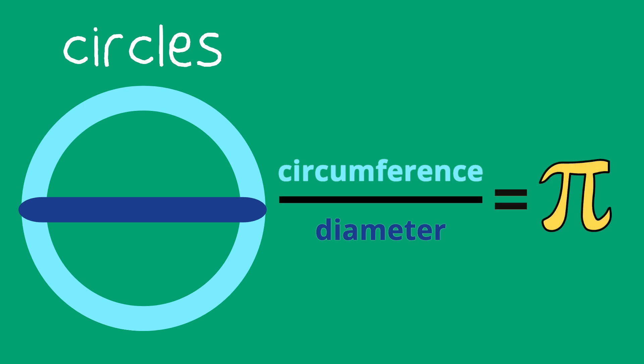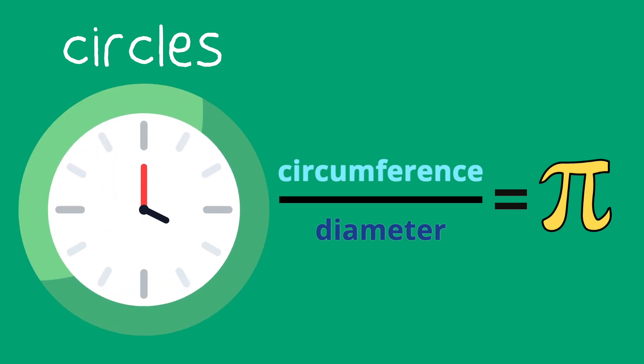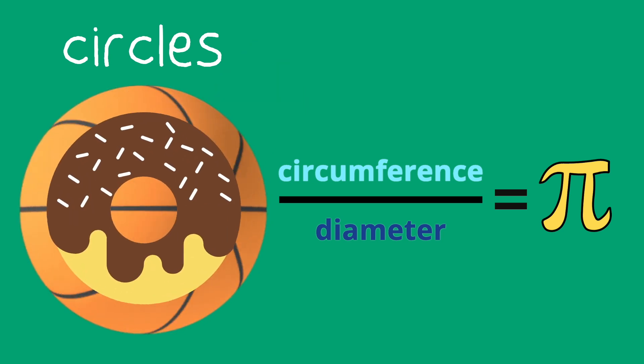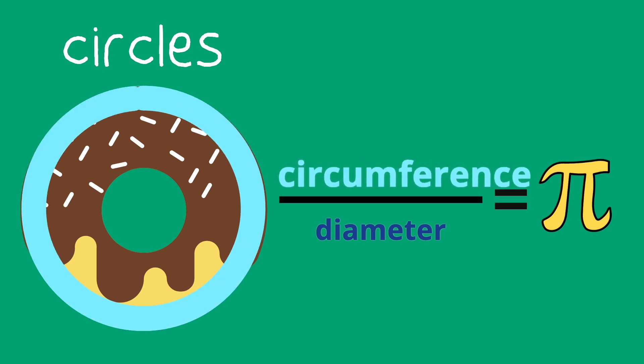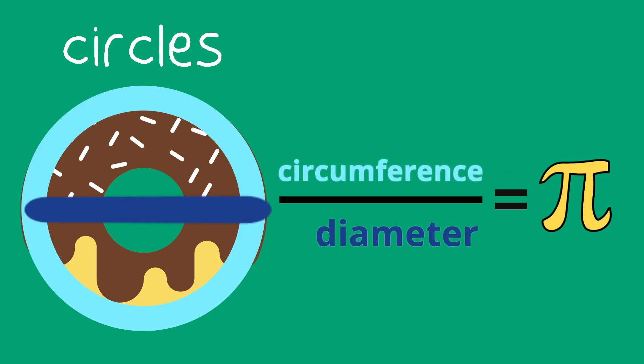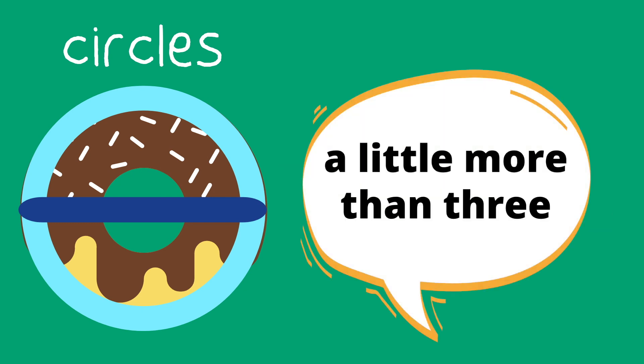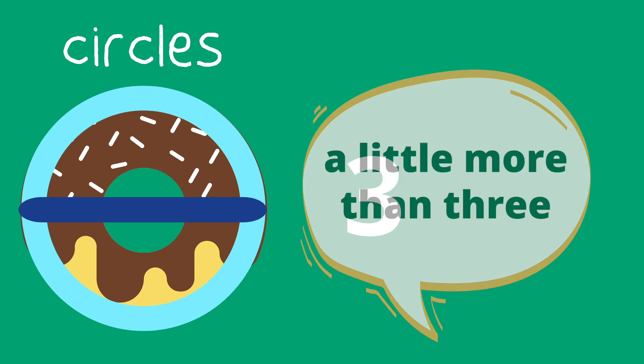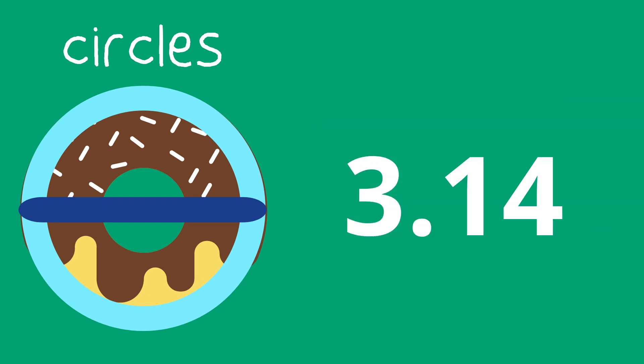Pi is just the relationship or ratio between the two distances. No matter what circle you look at, the circumference is always a little more than three times the diameter. But instead of saying a little more than three or 3.14, it's easier for us to use this Greek symbol, pi.